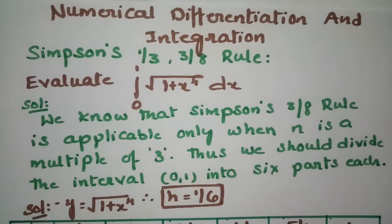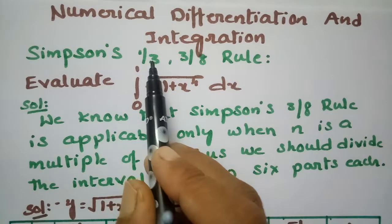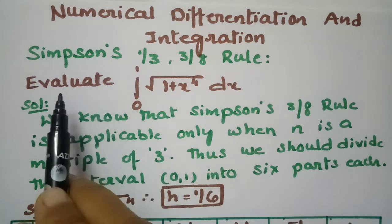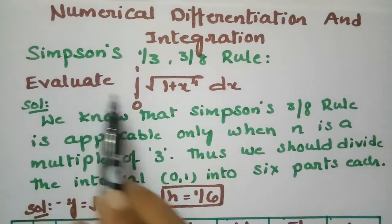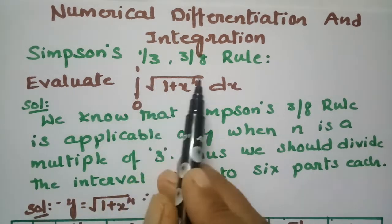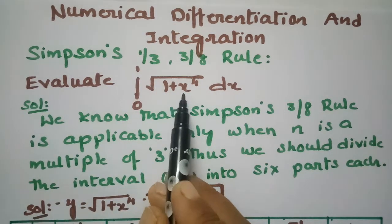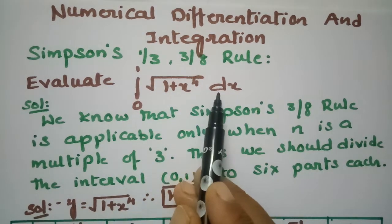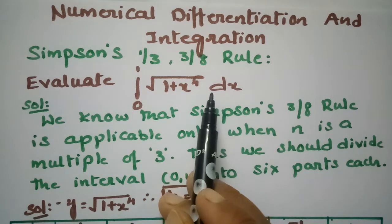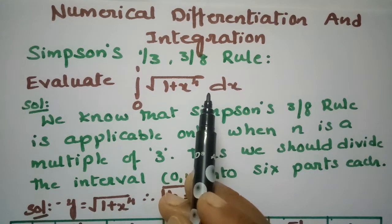In today's video, I am going to explain the problem using Simpson's one-third as well as 3/8 rule. I am going to evaluate the integral from 0 to 1 of √(1+x⁴) dx. This problem is from numerical differentiation and integration.